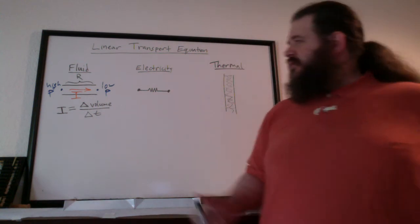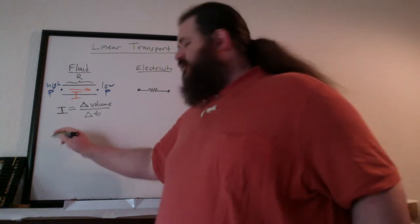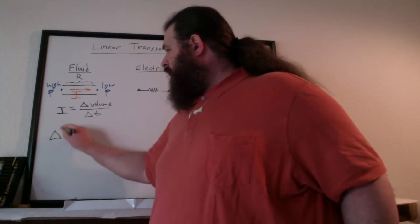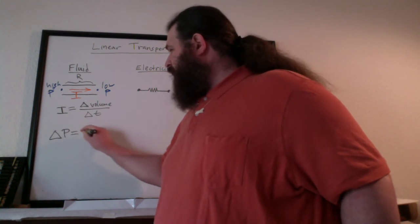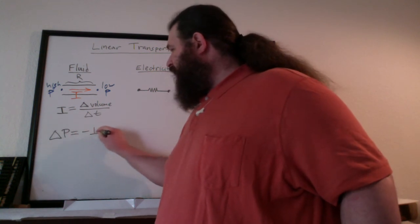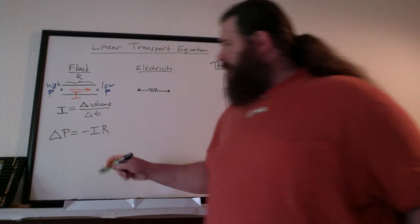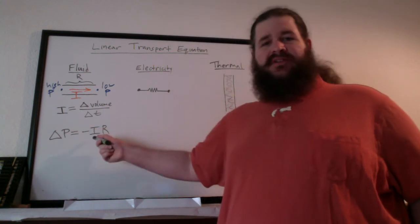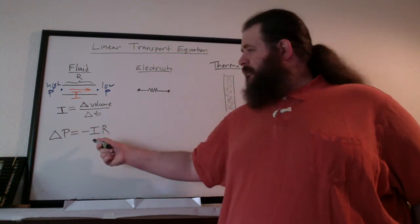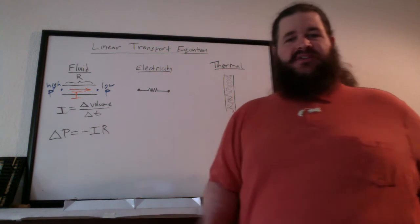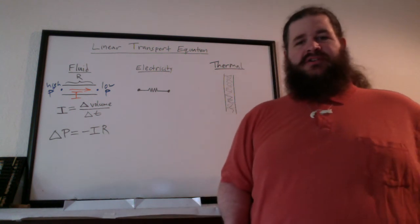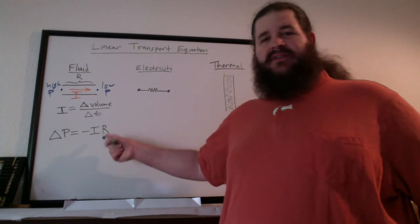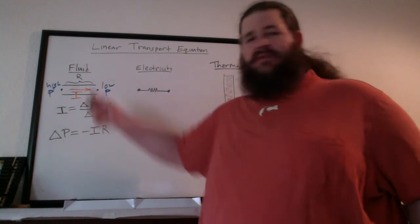The equation tying those together is our usual simplified Bernoulli equation: delta pressure equals negative IR. The more difference in pressure there is, the faster fluid is going to flow. The negative sign just signifies direction — current is going to flow from high pressure to low pressure. And resistance is the level of difficulty to get through this pipe.